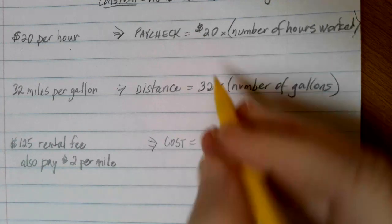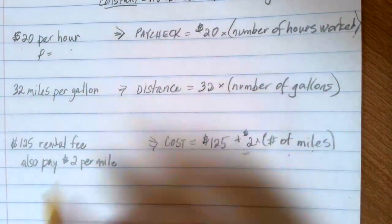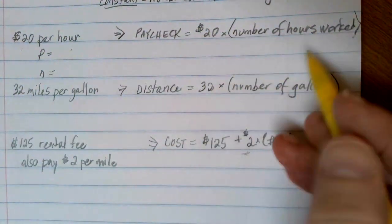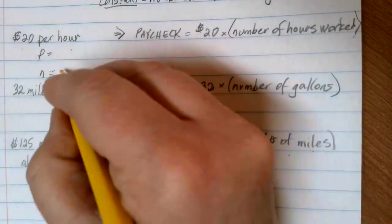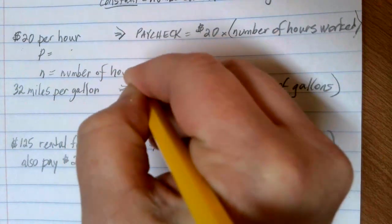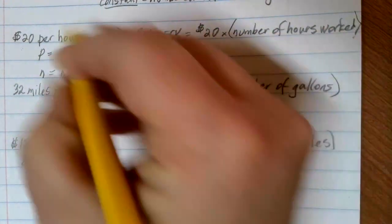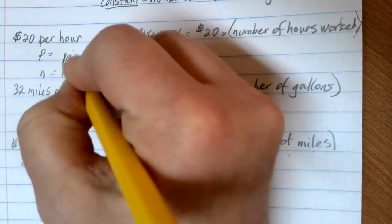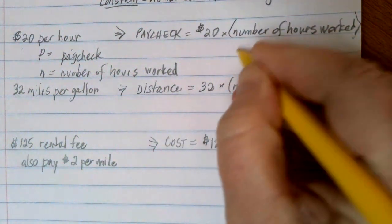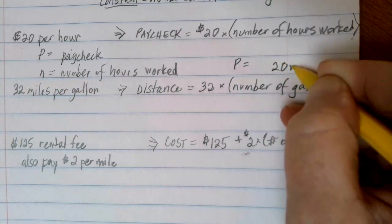If we're going to write these in terms of equations, we have two different variables that we like to represent. N is going to be whatever is changing. So in this example, the number that's changing is our number of hours worked and our paycheck dollars is going to be affected by that value. And we can write an equation like this: P is equal to 20 times N.